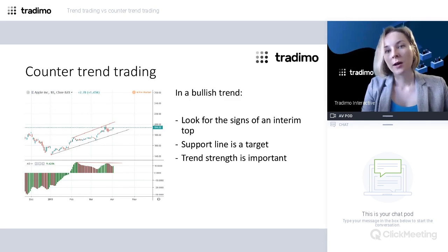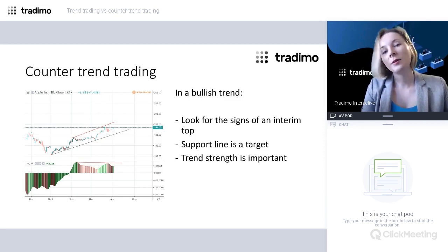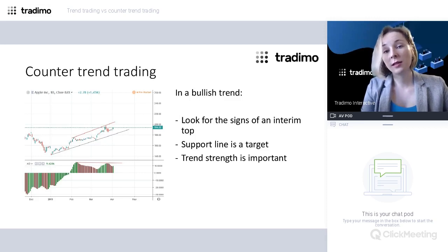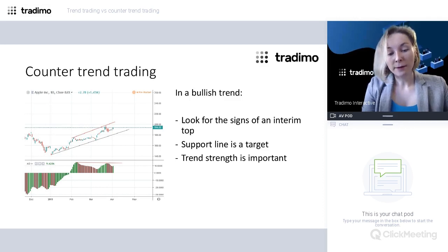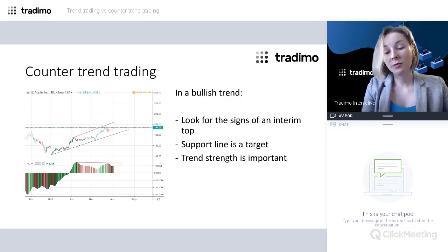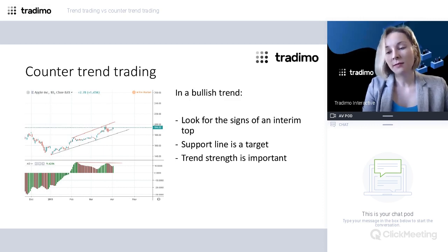As for counter trend trading, it is an attempt to enter the market when movement is against the main trend — because we do not want to buy at highs since we naturally expect a correction. Sometimes the signs of a correction are very evident, so a trader thinks it is necessary to use this opportunity. The key is to look for signs of an interim top in an uptrend — a sign that the market is not going to continue in that direction.